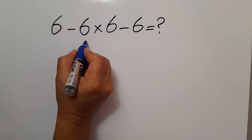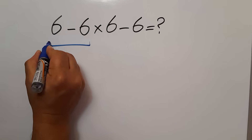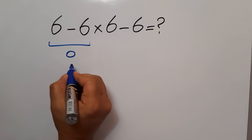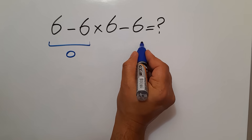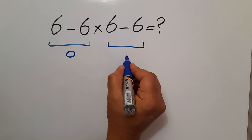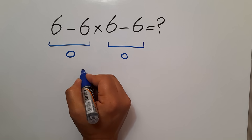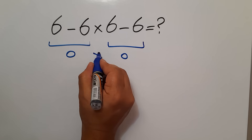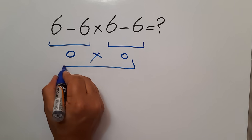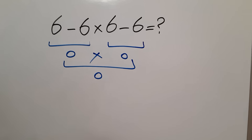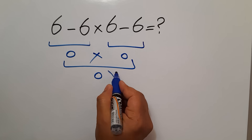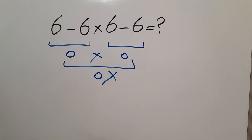6 minus 6 gives us 0, and 6 minus 6 again is equal to 0, and 0 times 0 gives us just 0. But this answer is not correct.